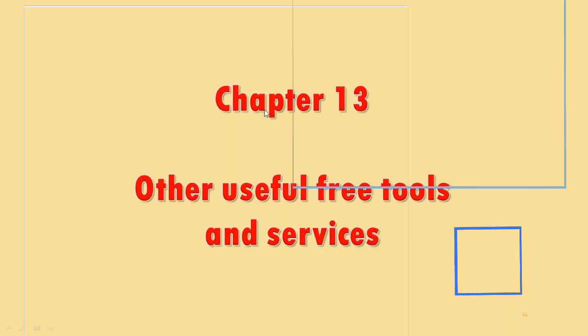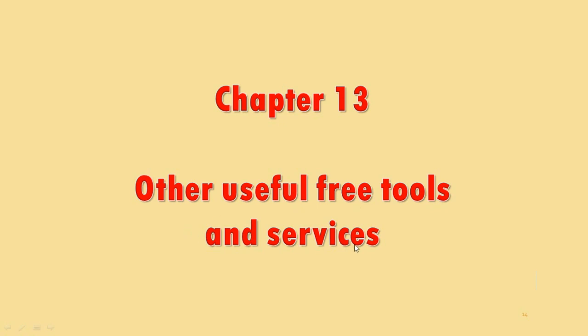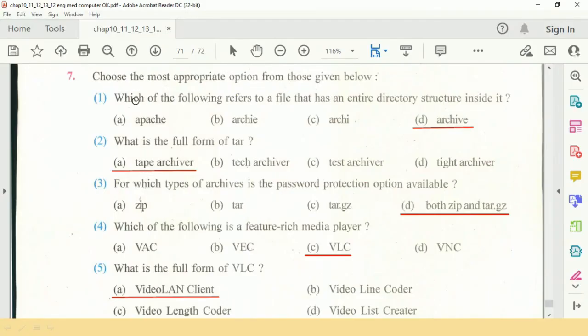Question number 13: other useful free tools and the different services available in the Linux-based operating system. Question number 1 is which of the following refers to a file that has an entire directory structure inside it? So that is archive. What is the full form of TAR? TAR archiver.